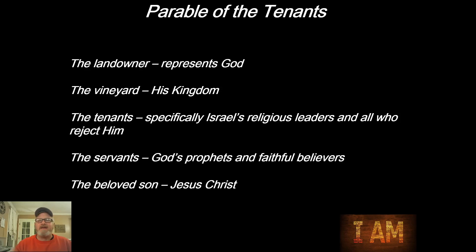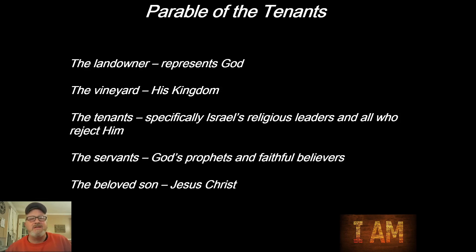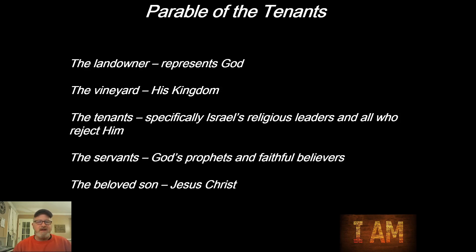Before we get into that, let's get some background on the players in this story. There's going to be a landowner, and he represents God. There's going to be the vineyard — this is the kingdom of God being established. The tenants are specifically Israel's religious leaders and all who reject him — basically the current leaders of the day. The servants are God's prophets and faithful believers who shared the good news of Jesus's coming. And then the beloved Son is obviously Jesus Christ. That gives you the idea of who Jesus is speaking of as he's talking to the teachers of the law.